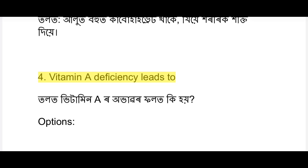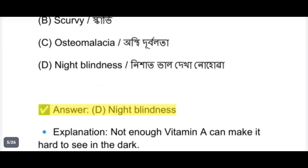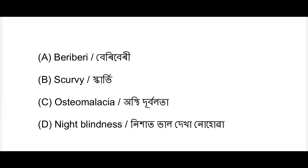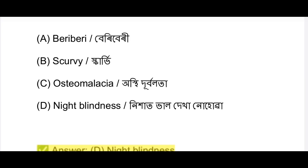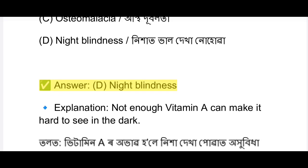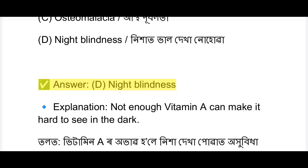Vitamin A deficiency - what disease does it cause? The answer is night blindness. Not enough Vitamin A can make it hard to see in the dark. This is an important question to note for the exam.